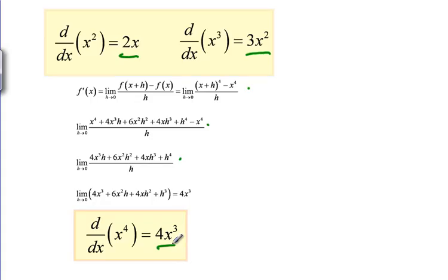So hopefully you're noticing a bit of a pattern here. We get X squared becomes 2X to the 1, X cubed becomes 3X squared, X to the fourth becomes 4X cubed.